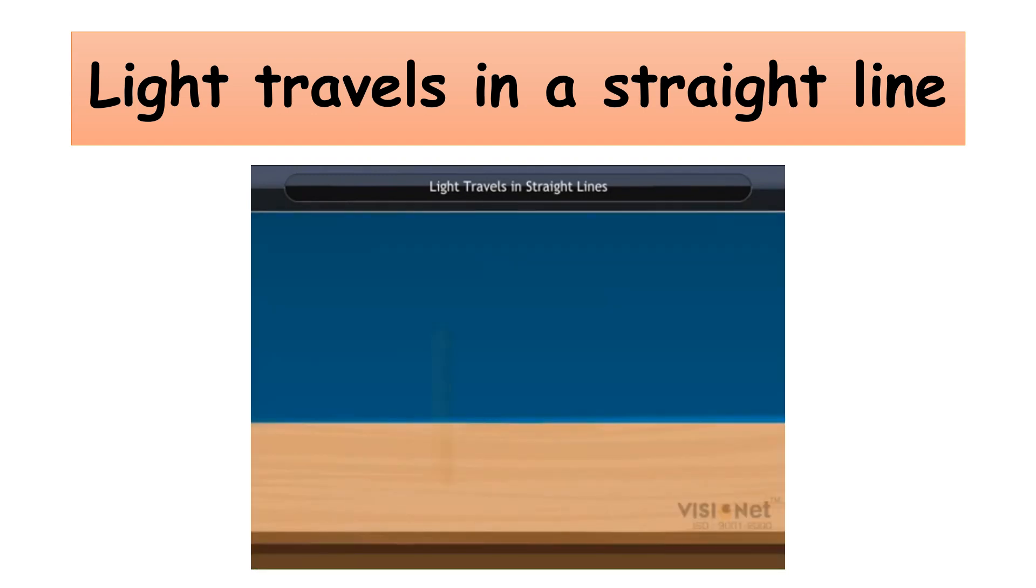Arrange cardboards A, B and C in a straight line along the edge of the table. Towards cardboard A, place a lighted candle such that the flame of the candle is at the same height as the hole in the cardboard.